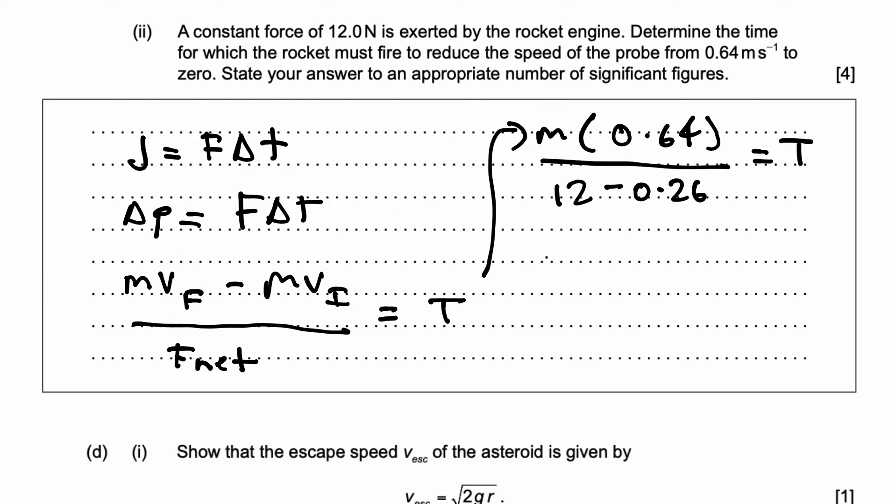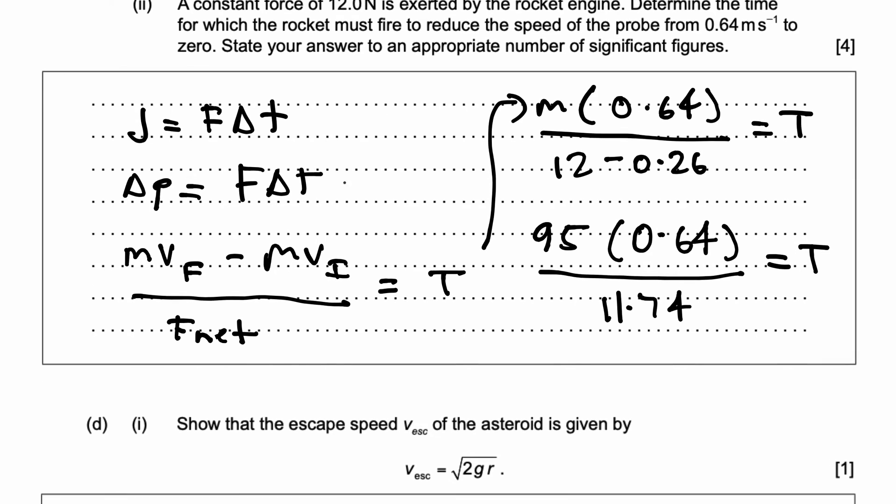We know the mass of the probe is 95 kilograms times 0.64 meter per second over 12 minus 0.26, 11.74 newtons. That gives me time. And now, if I put this all on my calculator, what do I get? You get 5.18 seconds, or they're asking for the significant figure, so you can say 5.2 seconds. That will be your answer.